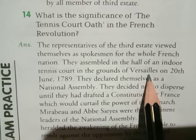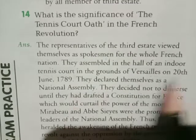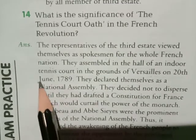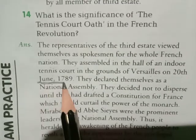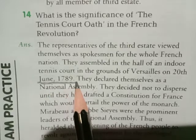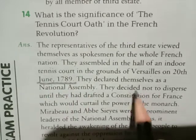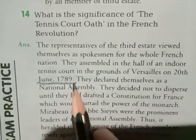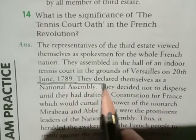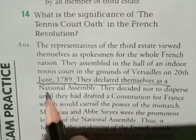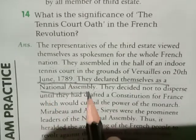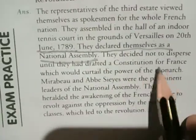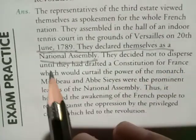They assembled in the hall of an indoor tennis court in the grounds of Versailles. This happened on 28th June 1789. They declared themselves as a National Assembly.